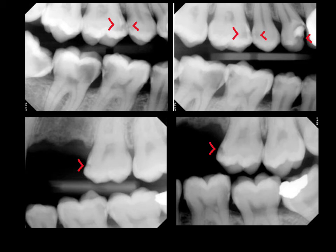Incipient decay next to an edentulous area is the most ideal situation for remineralization because we can get fluoride and other products directly to it — there's no tooth in the way. Sometimes if there's interproximal decay and a tooth gets extracted, like number 13 in this case, the decay on number 14 may become arrested. Not only can we get fluoride to it, but saliva can now reach that area, making it self-cleansing, and it may resolve.